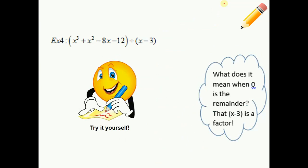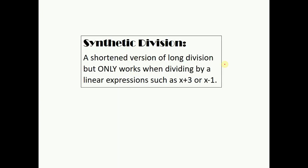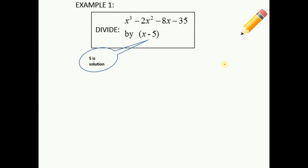Example 4, I want you to try on your own. You should get a remainder of 0 after you're done dividing, so be careful and make sure you get that. We will look over that problem in class. Now go on to your next booklet — you're going to want to label it as synthetic division. Synthetic is another way to do long division; it's actually quicker. However, synthetic only works when you're dividing by a linear expression such as x plus 3 or x minus 1, so it's not as useful as long division, but it goes 10 times faster.